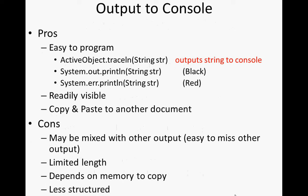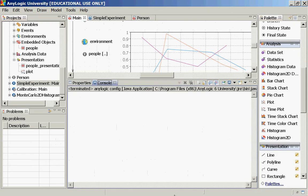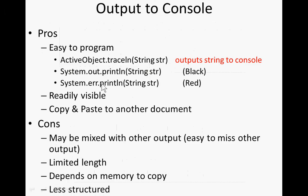I want to talk about a couple of other essentials. One of them is the option of outputting to the console. Within our models, within any logic block, we have this thing called the console. And that console can be used to give textual feedback about what's going on within a model.